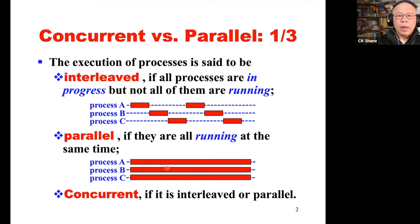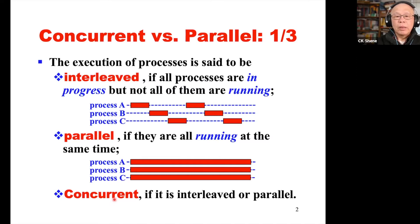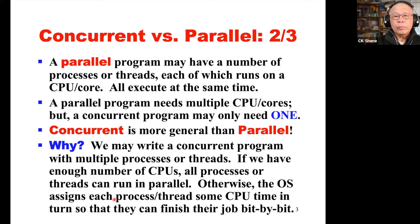After understanding interleaved and parallel: concurrent means either interleaved or parallel. So concurrent is more general than both. A concurrent program may have a number of processes or threads, each running on a CPU or core, all executing at the same time. A parallel program needs multiple CPUs, but a concurrent program may only need one, running in an interleaved way.